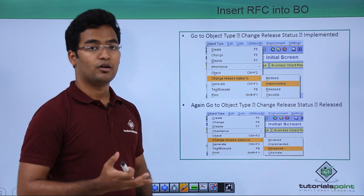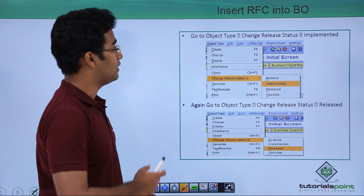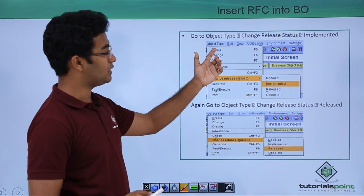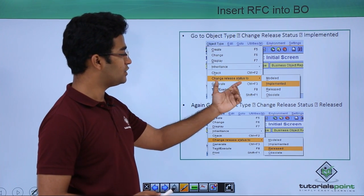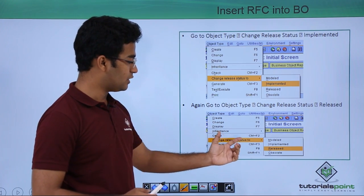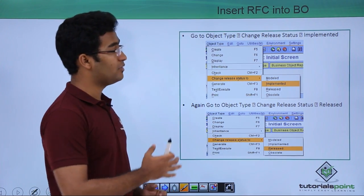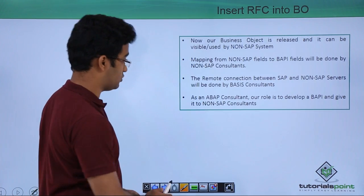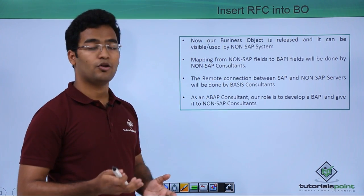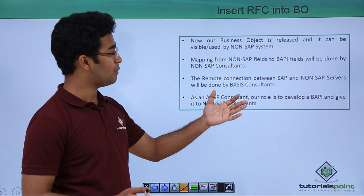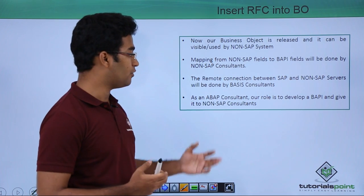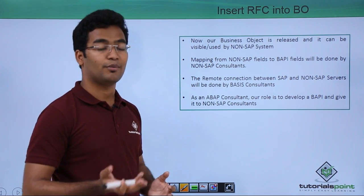At this stage we have converted our RFC into BAPI itself. Now we have to insert our RFC into the BO. In the object type we go to Object Type and change the release status to Implemented. Once that is done, we again go to Object Type and change the release status to Released. Now our RFC, that is the BAPI, is released and is good to be tested. This business object is released and can be visible or used by non-SAP systems. Mapping from non-SAP fields to BAPI fields will be done by the non-SAP consultant.